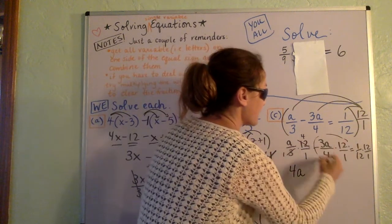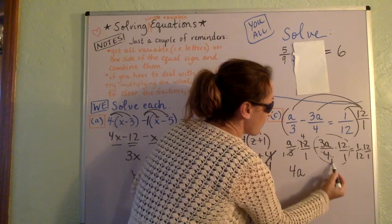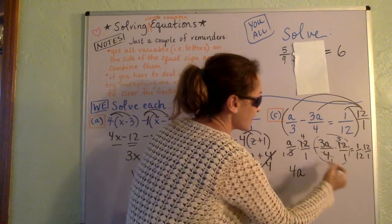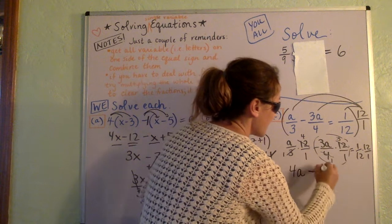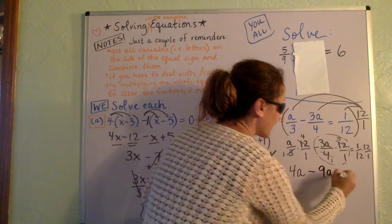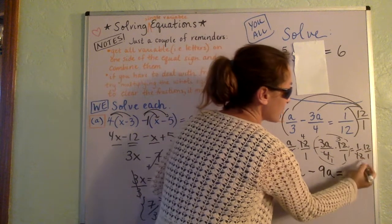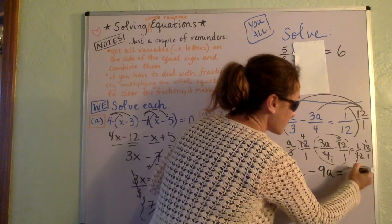And then now let's just look at this part. 4 down here, 12 up here. 4 goes into itself once, and it goes into 12 3 times. And so now this second term right here is the negative 3a times 3, which is negative 9a. And then lastly, 1 over 12 and 12 over 12. 12 goes into itself once and into itself once, so 1 times 1 over 1 times 1 is just 1.